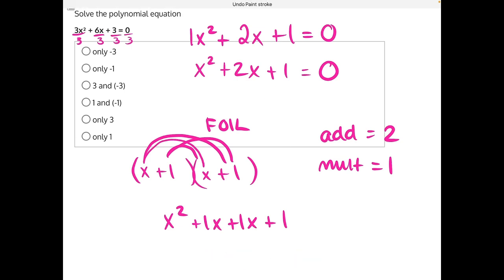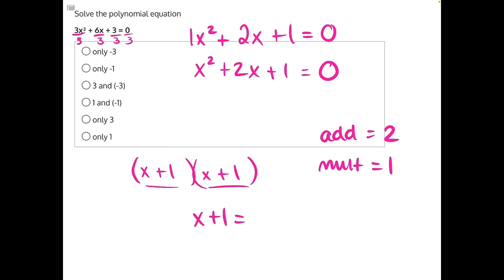So now we need to just go back and set both of these equal to 0 and solve. Since they are identical to one another, they're not going to produce different results, so we can just solve one of them. x plus 1 equals 0.